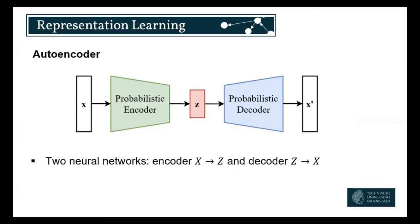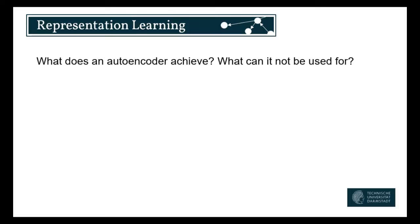I think the maybe most famous example of representation learning is autoencoders. Basically the idea from the last slide is the entire concept. We have some input — usually images — encode them into a latent representation that is smaller than the original representation, and then we have another neural network, the decoder, which can then reconstruct the original image as good as possible. One question here: we say that z has to be smaller than x, and that's basically the only constraint. What can we use such an autoencoder for, and what can we not use it for?